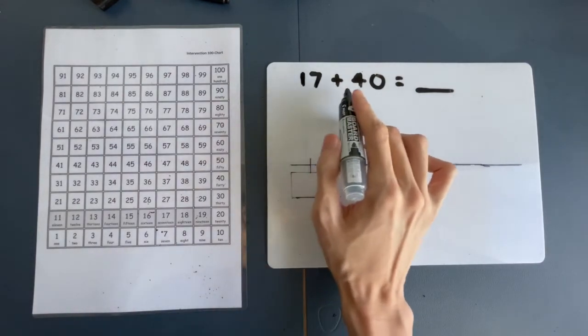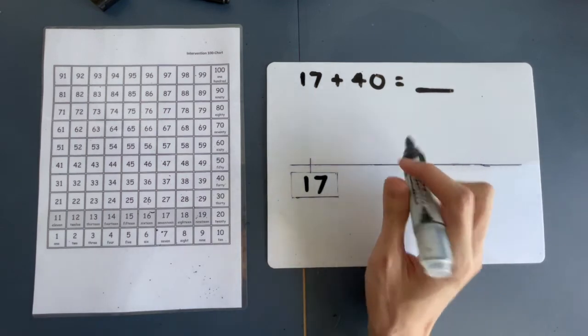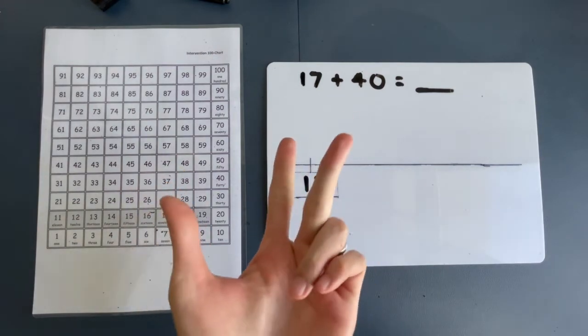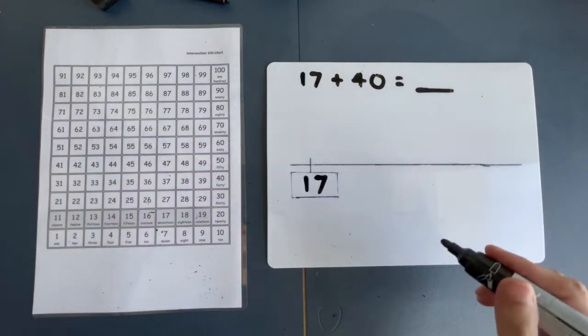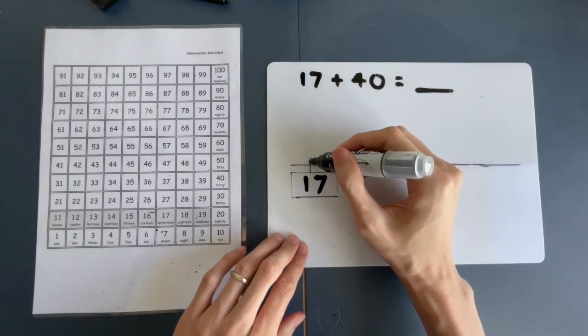Next question. 17 plus 40. 17 over here. And we don't jump 40 times, but how many 10s is in 40? 10, 20, 30, 40. Remember, count in 10s. So, there are 4 tens in 40. So, how many times do we jump? 4 times. So, let's jump 4 times.